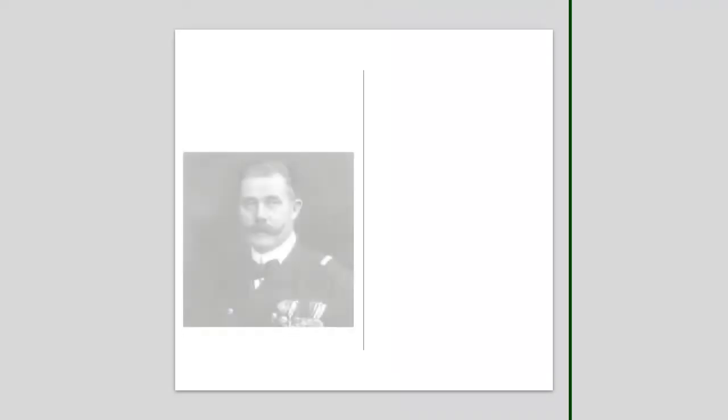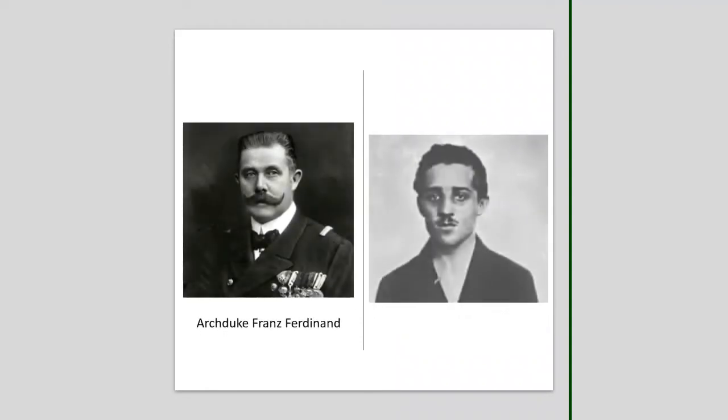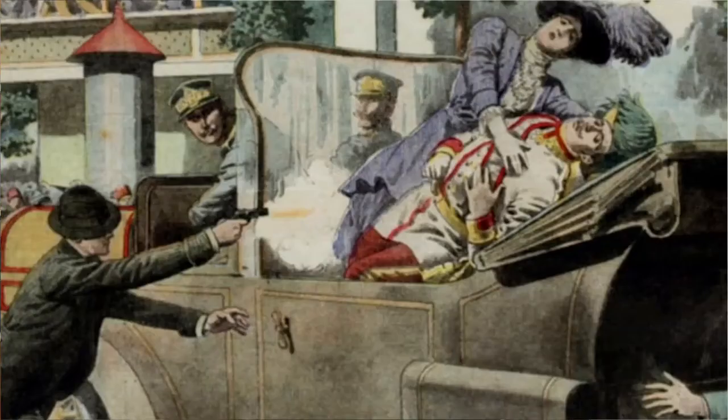Archduke Ferdinand, who was the heir to the Austrian throne, was murdered by a Serbian nationalist named Gavrilo Princip. Austria was then encouraged by Germany to declare war on Serbia, with promises to back them up if Russia or anyone else interfered. When Austria attacked Serbia, Russia started mobilizing its military to support Serbia. Germany declared war against Russia, then against France, followed by an invasion of Belgium — all of which caused Britain to declare war on Germany.